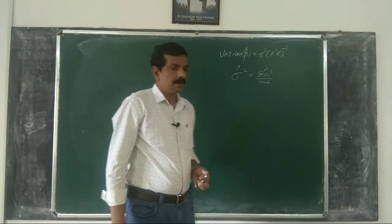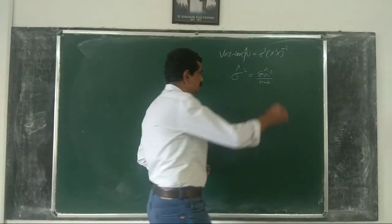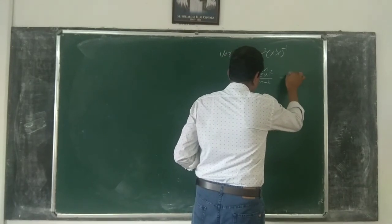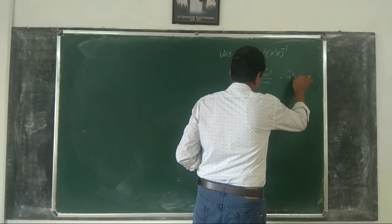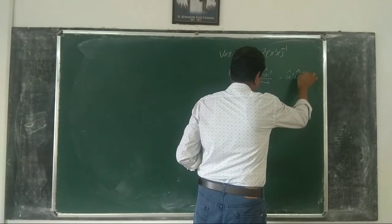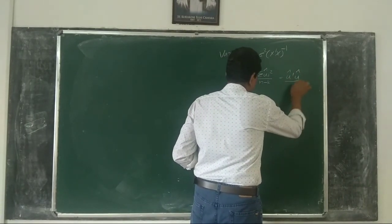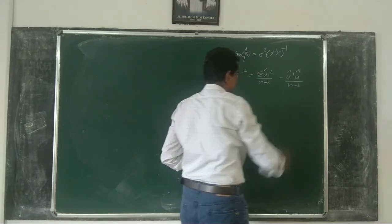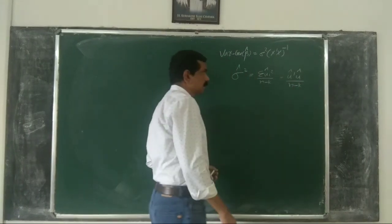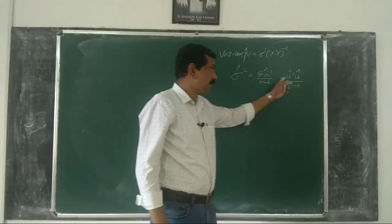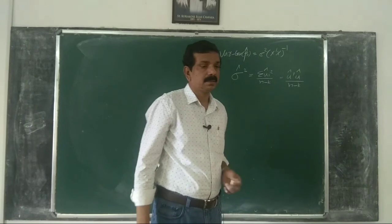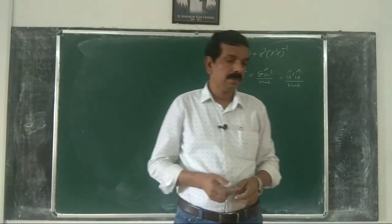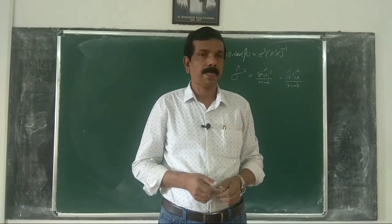In matrix terms, sigma-hat squared is u-hat transpose u-hat divided by n minus k. Note that u-hat transpose u-hat equals the sum of u-hat_i squared — we have derived this earlier.